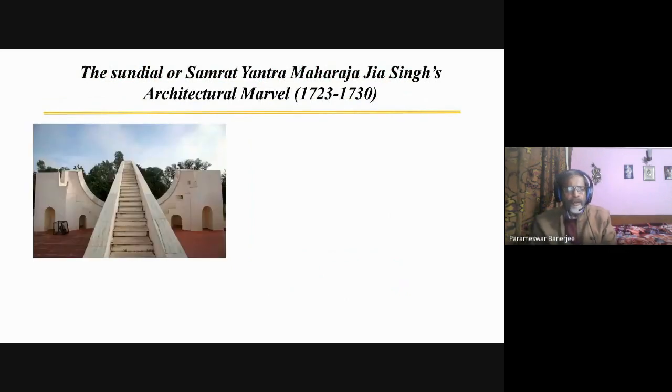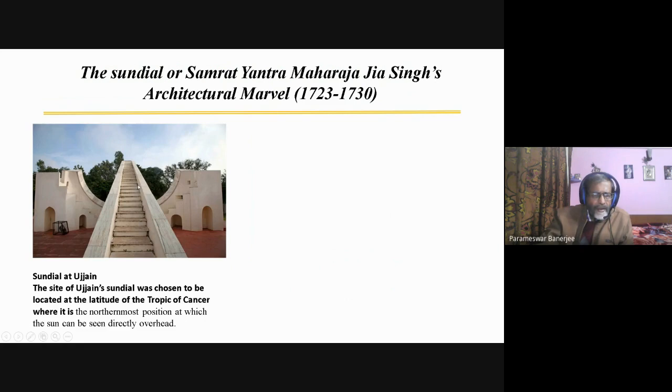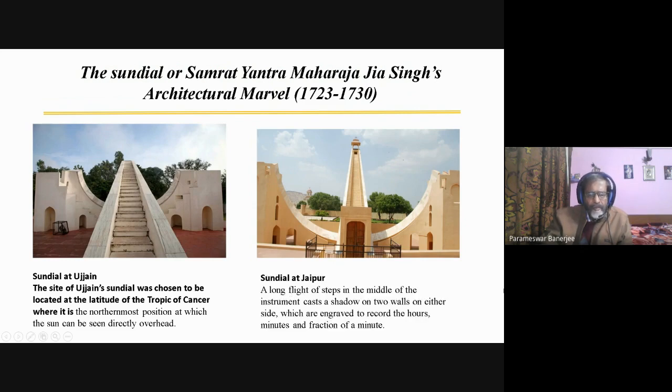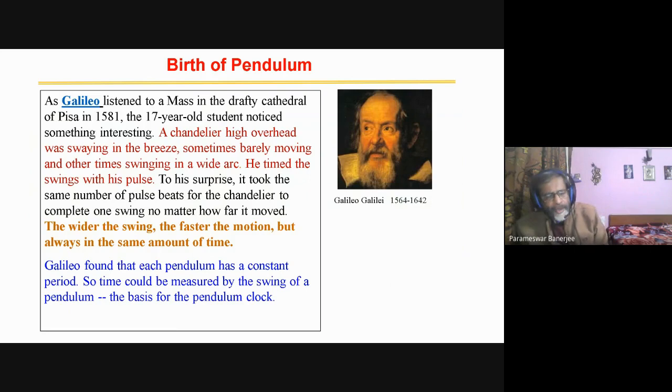Now, this is another important thing I would like to bring to your knowledge: the sundial and Samrat Yantra. Maharaja Jai Singh is an architectural marvel. This was built by Jai Singh, Maharaja Jai Singh. He has built in many places in India, including one in Ujjain and one in Jaipur. Jaipur has the largest sundial, which has quite good accuracy for that time. It was a fraction of a minute, you can see. And Ujjain has some different locational advantage, because it is placed on the Tropic of Cancer, which has geographical importance. So, this is very important, but there are many other things.